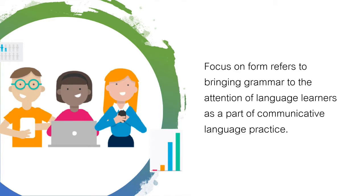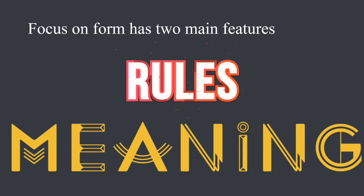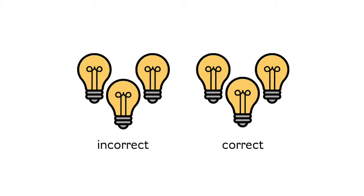Focus on form has two main features. First, focus on the rules is less important than focus on the meaning. That is, the emphasis is on the meaning of the language, which is primary, and a shift towards a focus on formal aspects occurs only when meaning is not accurately conveyed or when the instructor suspects that shift is necessary for comprehension.